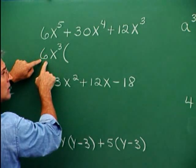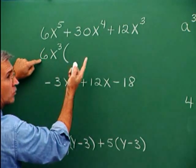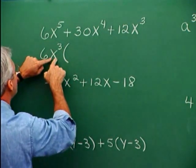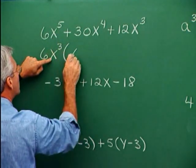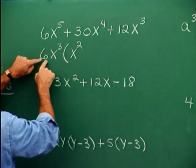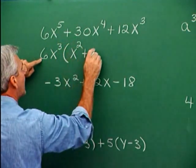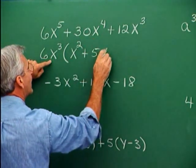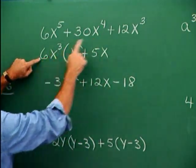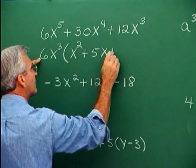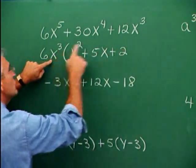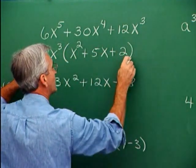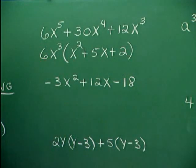When we pull 6 out of 6, we have no numbers left — just an understood 1. When we pull x cubed out of x to the 5th, we're left with x squared. Pull 6 out of 30, we're left with 5. Pull x cubed out of x to the 4th, and we're left with x. Pull 6 as a factor out of 12, and we're left with 2. Pull x cubed out of x cubed, leaving no x factors. So here is our factored form.